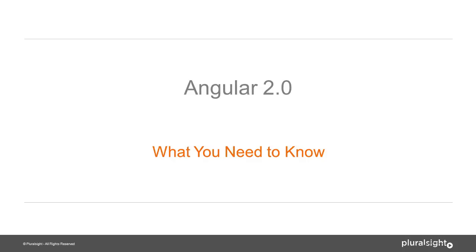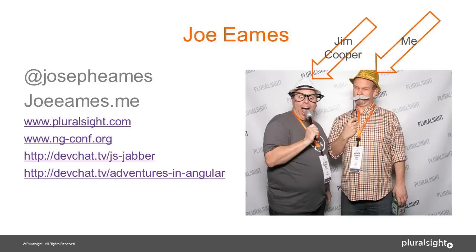We need to have the obligatory slide about me. I'm on the right, and we've got Jim Cooper on the left. Jim Cooper is a friend of mine and another Pluralsight author. I threw up my Twitter account so you can hear my ramblings, a personal website where I very frequently blog. I'm a Pluralsight author — my primary job right now — but I also organize some conferences: ng-conf and ng-vegas, and I'm on a couple of podcasts, JavaScript Jabber and Adventures in Angular. Go ahead and check those out.